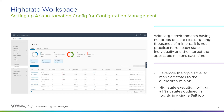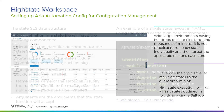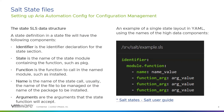High state is useful for ensuring all your database servers or web servers apply a specific set of policies defined in your states, and for critical systems that need to remain in compliance. You can schedule the high state to run continuously so that the states defined in your top file are continuously applied to and checked against the minions defined in the high state workspace.